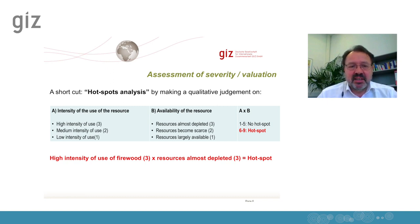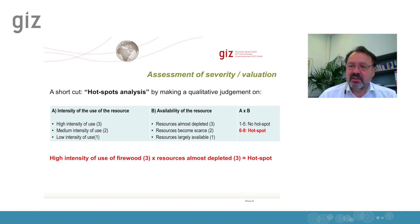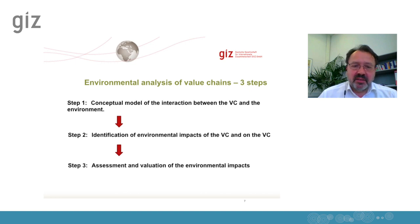This hotspot analysis is a practical way to make a qualitative judgment of the severity of a problem. Before we continue with energy mapping, I would like to summarize what ValueLinks would approach in general for the assessment of environmental questions and particularly for energy. In step one, the value chain map is our starting point for setting up a conceptual model of the interaction between the value chain and the environment. We differentiate between different technical systems and different resource categories.